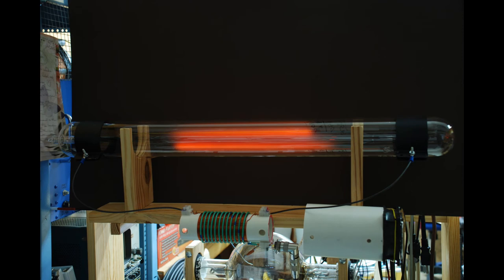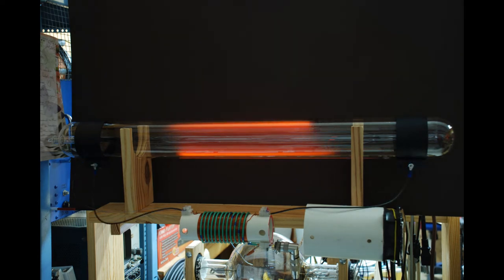Here the tube is powered up at a very low power level so that you can see the ionization that occurs between the side wires. Let's rotate the tube slightly so you can get a better view.